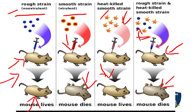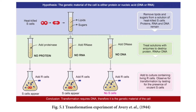The same technique was followed in vitro, that is, inside the laboratory. They took the S strain with its lipids and sugar, along with the heat-killed S strain.